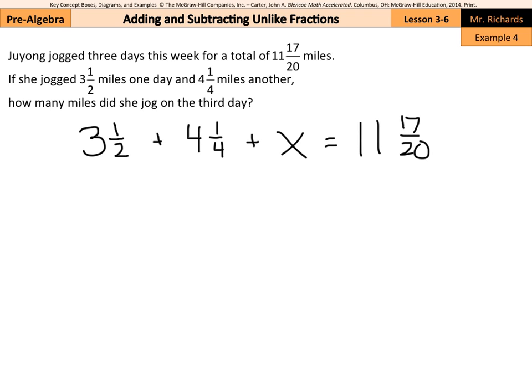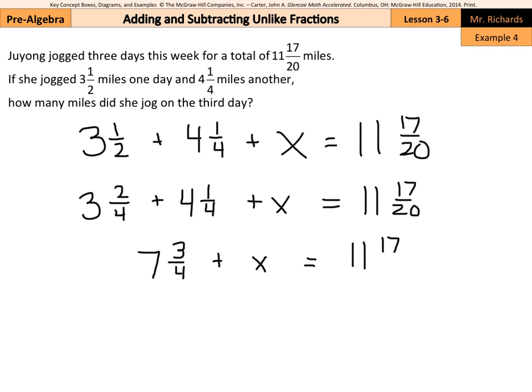Alright, let's combine like terms here. We need to have common denominators, and our common denominator is going to be fourths for the left side of the equation, at least. And so, two times two is four, one times two is two. So I can simplify this into seven and three-fourths plus x is going to equal eleven and seventeen twentieths.